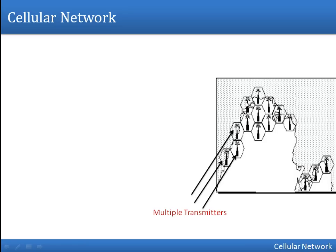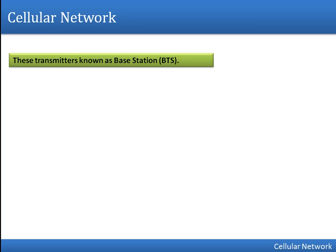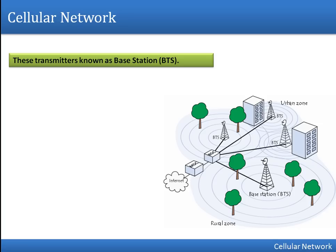In cellular networks we have multiple transmitters — instead of using a single powerful transmitter, we use multiple low-power transmitters. These transmitters are used for both transmitting and receiving, so they are also known as transceivers, and we call them base stations. Every base station in a GSM network, these BTS, can cover only a particular area — that area is known as a cell: cell one, cell two, cell three.